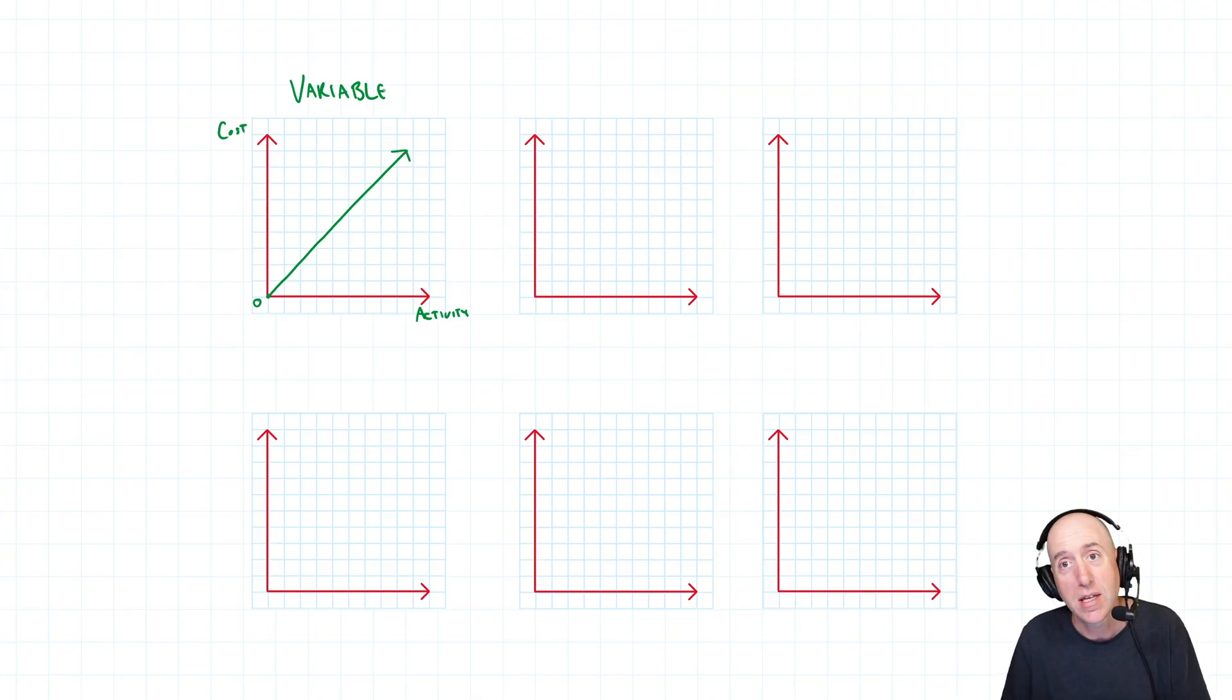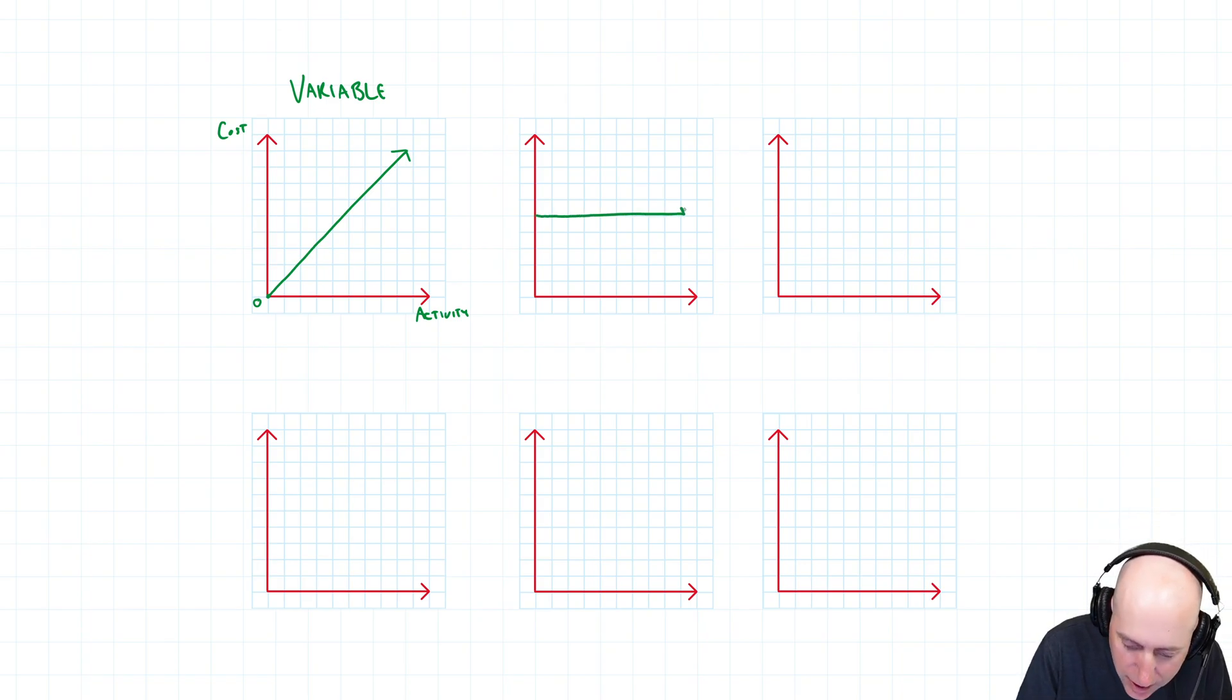For Pepsi, they presumably own that factory and they pay property taxes on the factory. Their property tax cost, if they make one more can of Pepsi, it doesn't change. They could make zero cans of Pepsi and pay the same amount of property tax as if they made a million cans. Their property tax graph looks like this. We would call that a fixed cost.